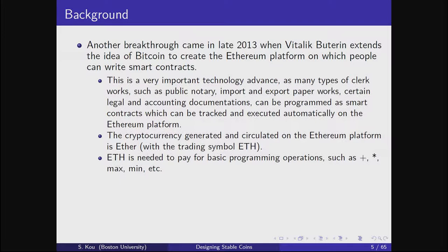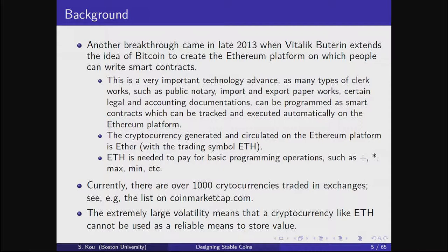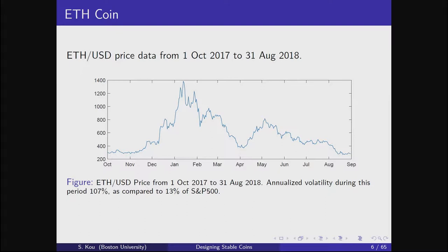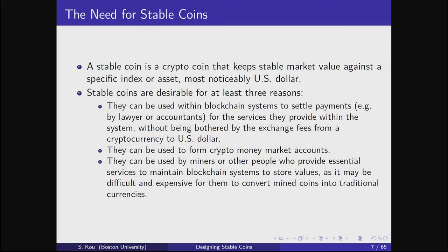There are now thousands of cryptocurrencies trading on exchanges, but one major drawback is extreme volatility. Looking at ETH from October last year to about September 2018, it goes up and down dramatically — now around $116. The annualized volatility is about 110%, compared to 13% for the S&P 500. So what is a stable coin? A stable coin is a crypto coin that keeps stable market values against a major index or market asset, for example, against the US dollar.